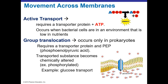We've talked about passive movement across membranes. Active transport requires a transporter protein, similar to what we saw in facilitated diffusion, but it also requires energy in the form of ATP. This occurs because bacterial cells out in the environment often find themselves in low-nutrient conditions, so they spend the energy to bring those nutrients in.